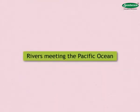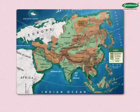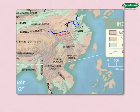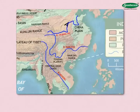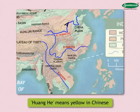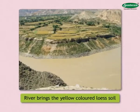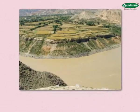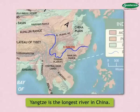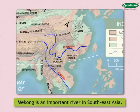Rivers meeting the Pacific Ocean: Among these, Huanghe, Yangtze, and Mekong are the main rivers. The word Huanghe means yellow in Chinese. This river brings yellow-colored loess soil with it on a large scale, which is why it is called Huanghe. Yangtze is the longest river in China. Mekong is an important river in Southeast Asia.